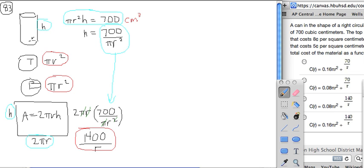And then we have the areas of the top and the bottom. When you put those together, you get the total surface area. Well, we're not trying to figure that out. We're trying to figure out the cost in terms of just the radius.